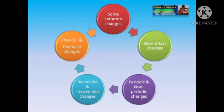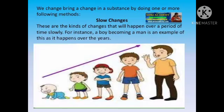Let's see the classification of changes. The changes that take place around us can be classified as: first, slow and fast changes; number 2, reversible and irreversible changes; number 3, physical and chemical changes; number 4, desirable and undesirable changes; and number 5, natural and man-made changes.